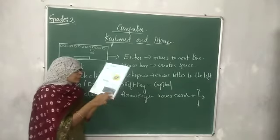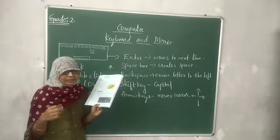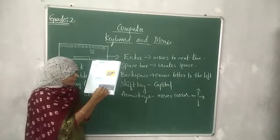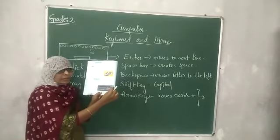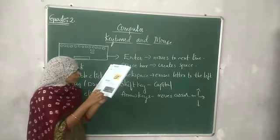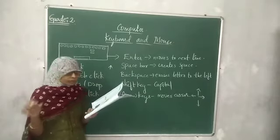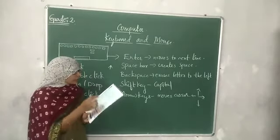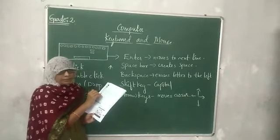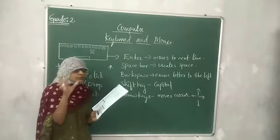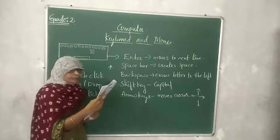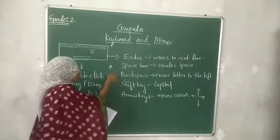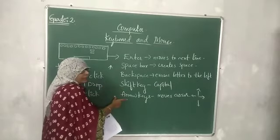Coming to the keyboard, it has a number of small keys. The keys contain alphabets and numbers. Two sets of numbers are there — one set above the alphabets and one set on the side. Alphabet keys provide all the letters of the English alphabet. Number keys provide two sets from 0 to 9. Apart from these, there are some special keys — for example, Enter, Space Bar, Backspace, Shift key, and arrow keys.